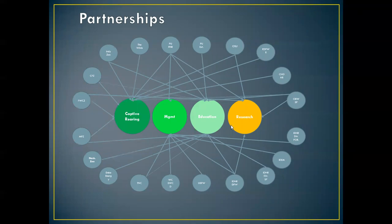If you take those four components, here is an example of my Hellbender partnerships: we have captive rearing, management, education, and research. Purdue and my lab play a huge role in the research work being done on Eastern Hellbenders, but we also have a hand in education, management, and captive rearing, as do all the various partners. When I started this program back in 2007 it was the Department of Fish and Wildlife with IDNR and Purdue University, and I recognized early on that we needed more partners — zoos, different universities, different organizations, and Departments of Natural Resources in different states — to build this comprehensive Hellbender partnership team.